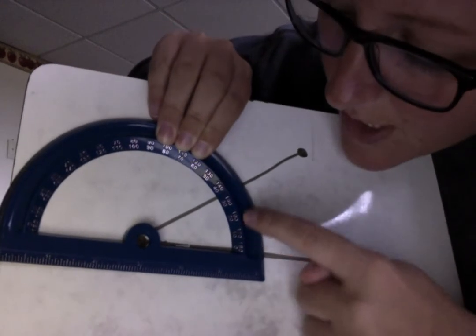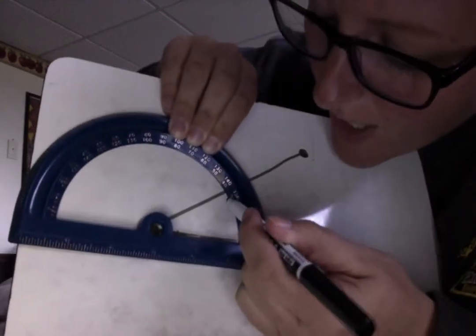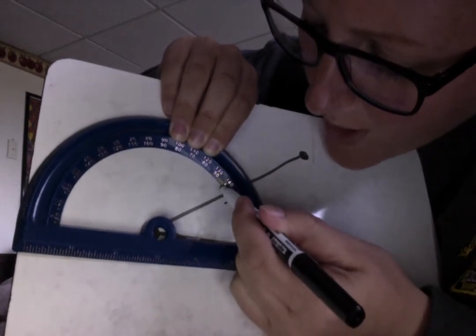So it goes 0, 10, 20, 30, and 40. So 30 is about right here and 40 is about right here.